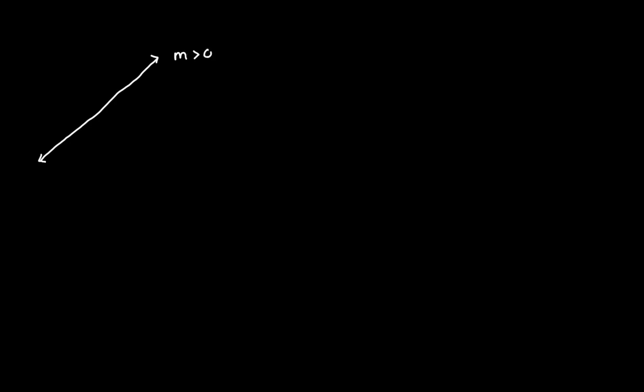Here we see that the slope of this line is positive. What does that actually mean? We have a change in x — so as we increase x, what happens to y? We see that it also increases. So y changes in a positive direction when x changes in a positive direction — we have positive slope.